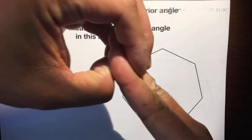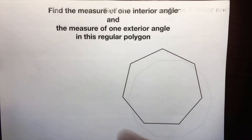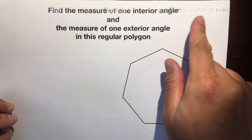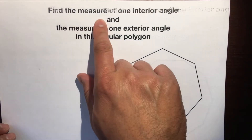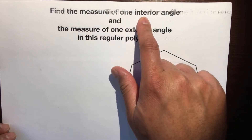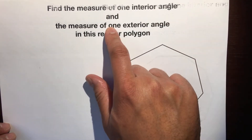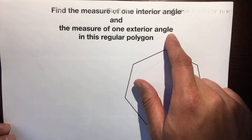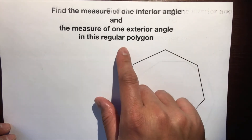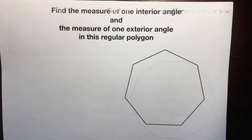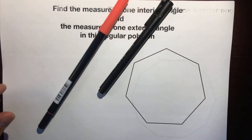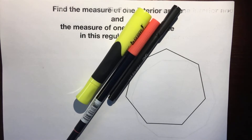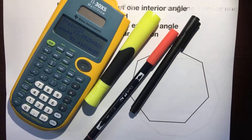Hello, this is Mr. Kinyanola and I'm going to help you find — please ignore my printer not printing very well — the measure of one interior angle and the measure of one exterior angle in this regular polygon. So before we do this, grab some tools: you need a pen, a marker, a highlighter, and a calculator.